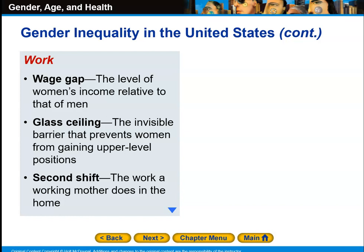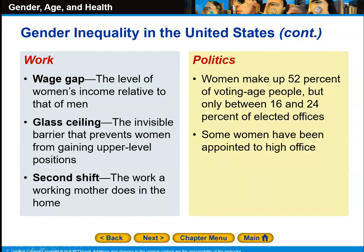Most women eventually work what is known as the second shift. Women go to work all day, do their 40 hours a week or more, and then come home. Typically, the woman is the dominant caregiver in the house — she cleans the house and tends to take care of the children. The men do less of those chores, and as a result, this is often referred to as the second shift for women. In politics, women make up about 52% of the voting-age population, but only 16 to 24% of elected offices.